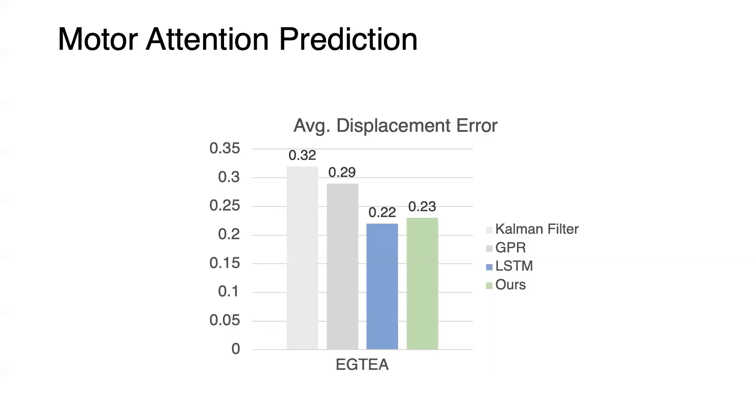Our method also achieves competitive results on predicting future hand trajectory. We report the average displacement error as previous works on trajectory prediction. Note that all other baseline methods require the coordinate of observed hand for prediction, which simplifies trajectory prediction into a less challenging regression problem. In contrast, our model does not need hand coordinates for inference.